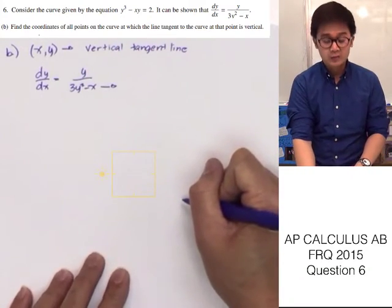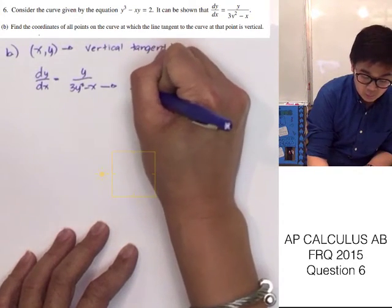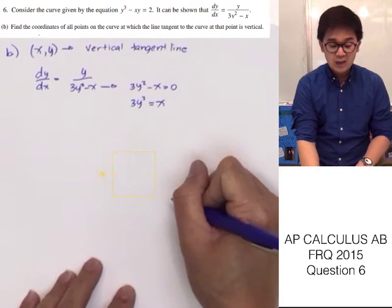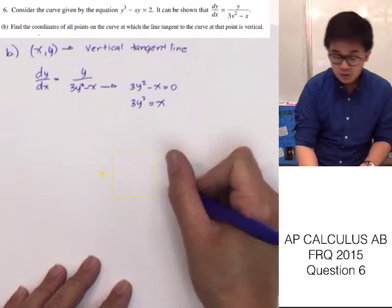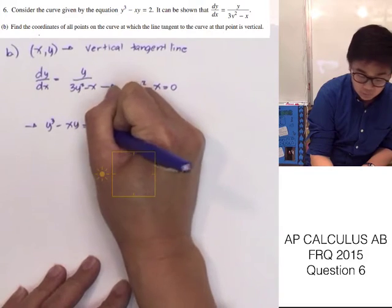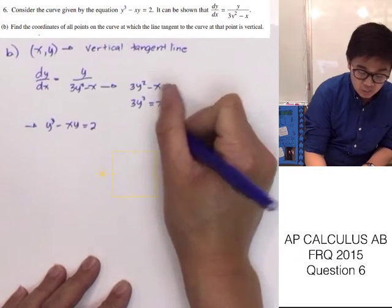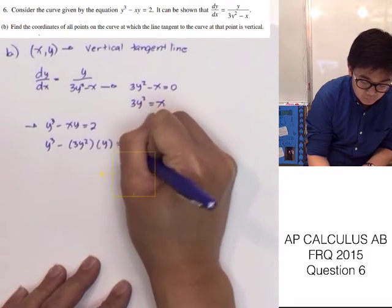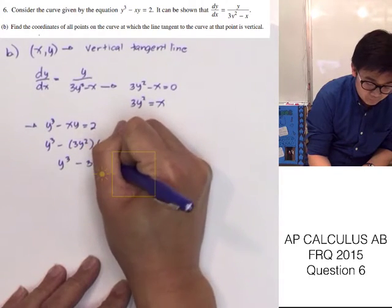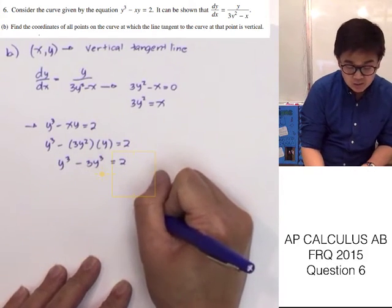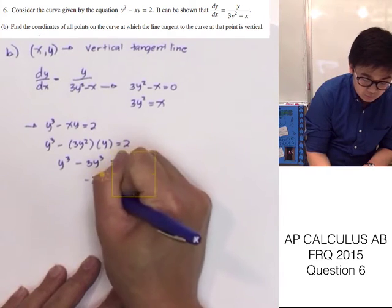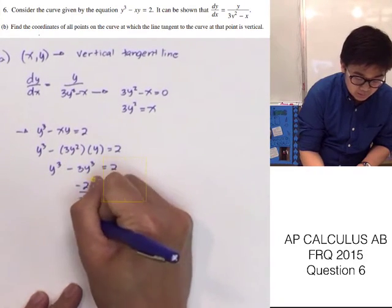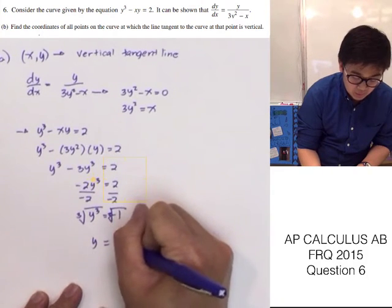We find the values where the denominator equals 0: 3y squared minus x equals 0, so 3y squared equals x. We plug this into the curve function y cubed minus xy equals 2, replacing all x's with 3y squared. This gives y cubed minus 3y cubed equals negative 2y cubed equals 2. Dividing both sides by negative 2, y cubed equals negative 1, so y equals negative 1.